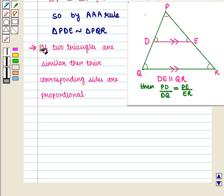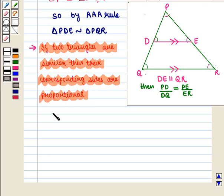We know that if two triangles are similar, then their corresponding sides are proportional. So here, PQ upon PD will be equal to PR upon PE, and this is equal to QR upon DE.